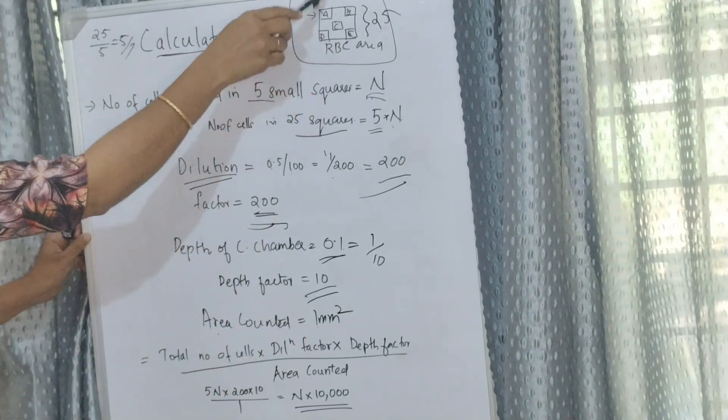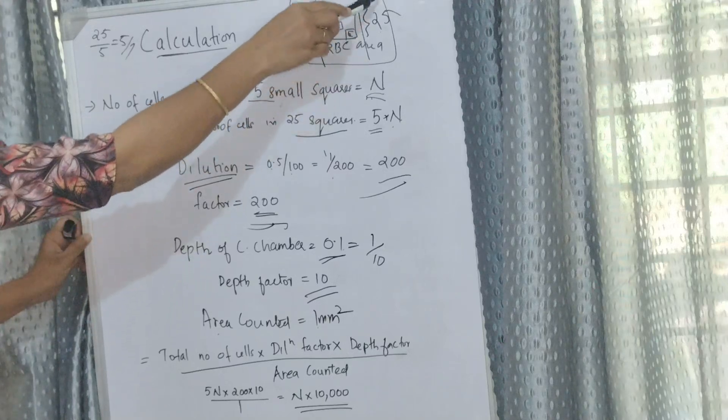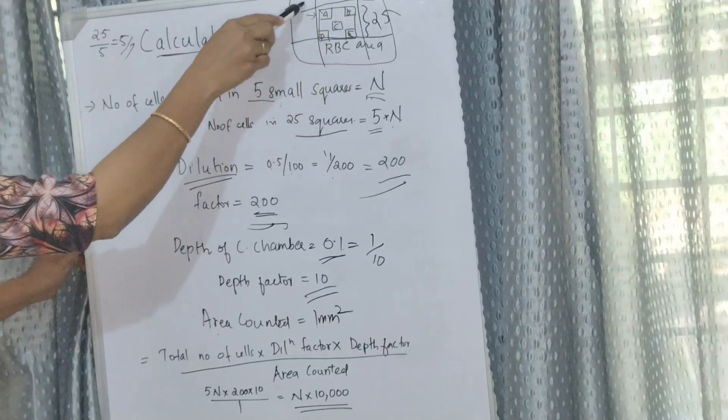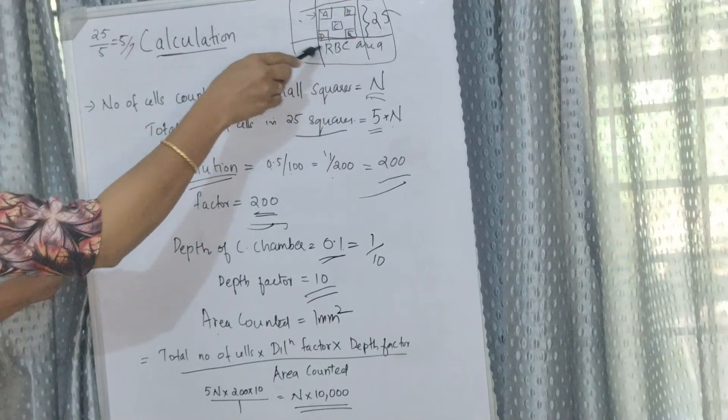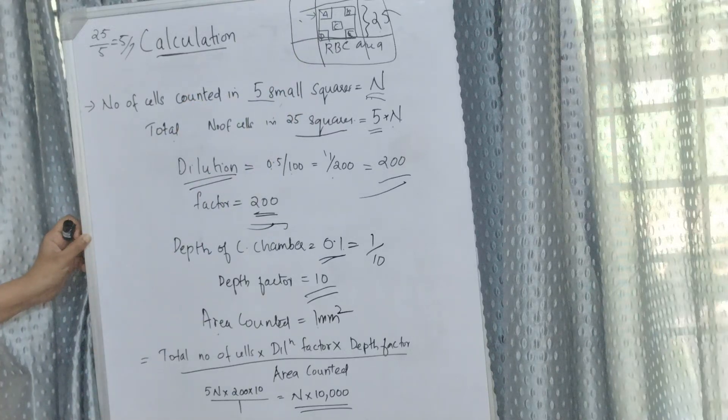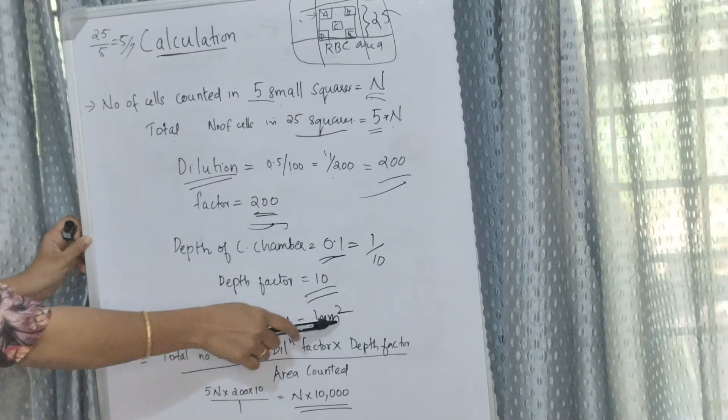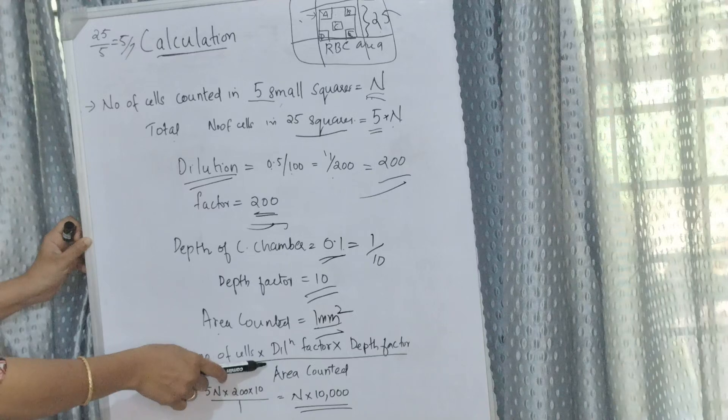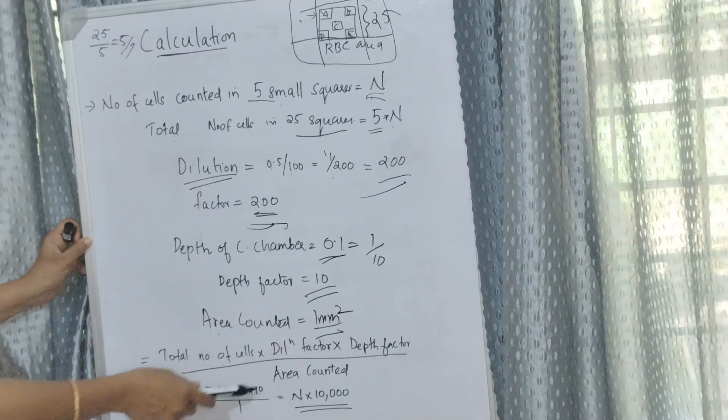Area counted is 1 millimeter square. We have 9 millimeter square areas in the counting chamber. Nine squares are there, of which the central square is used for RBC counting, which is 1 millimeter square.